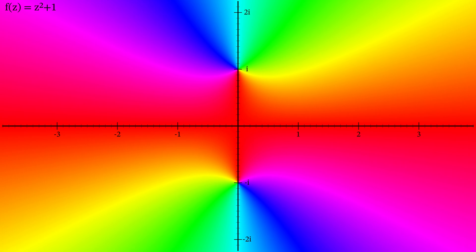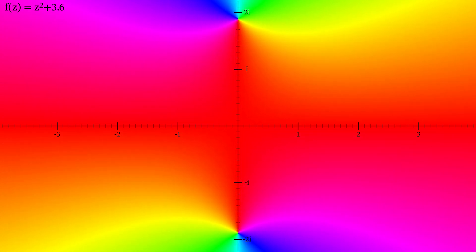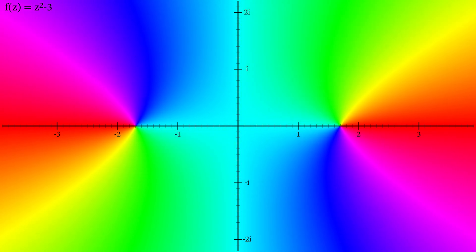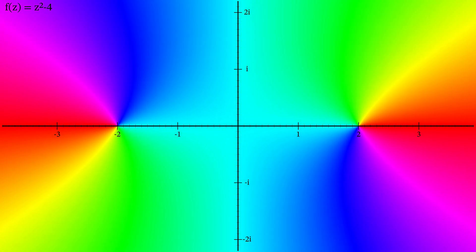Watch what happens when we add or subtract different constants from z squared. For the function z squared minus 4, we can see that the real axis is cyan between the points plus or minus 2, indicating that the output is real and negative. We can see the zeros at plus or minus 2.